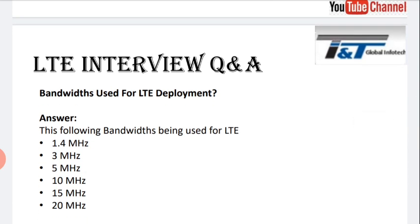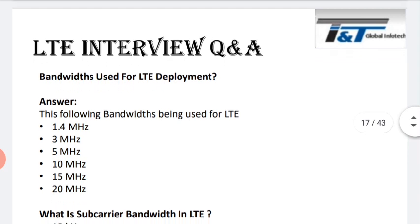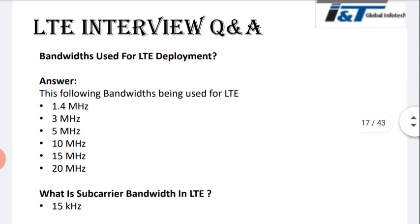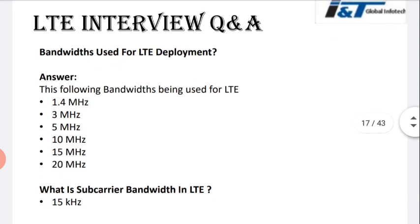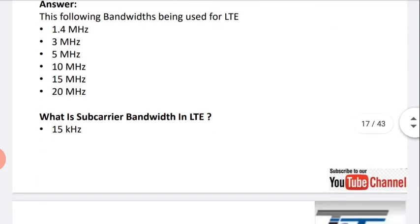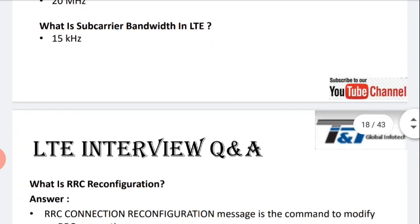So higher the bandwidth, higher the capacity and higher the throughput — everything we can get. The next question is: what is the subcarrier bandwidth in LTE? That is 15 kilohertz.